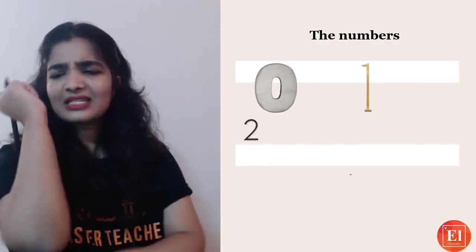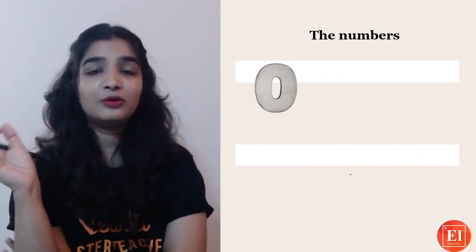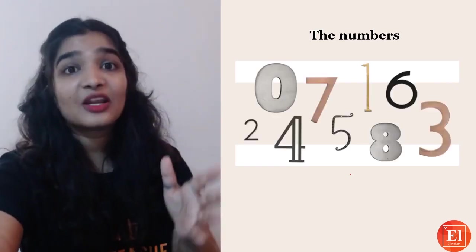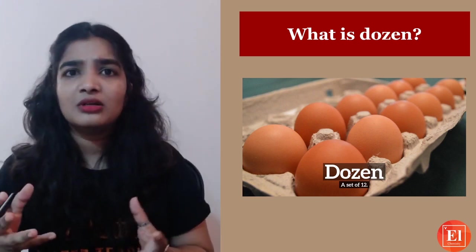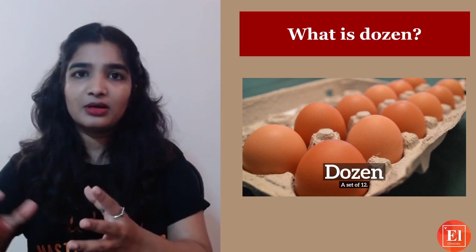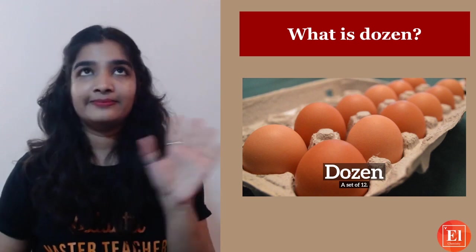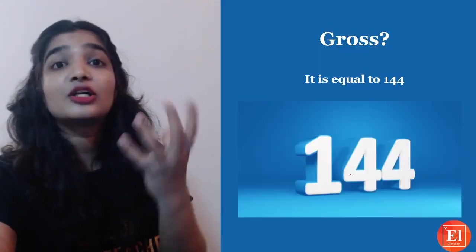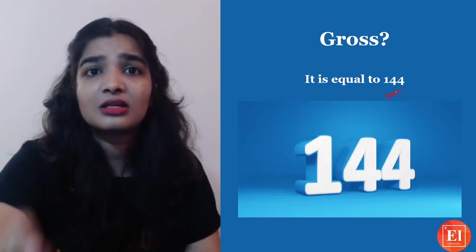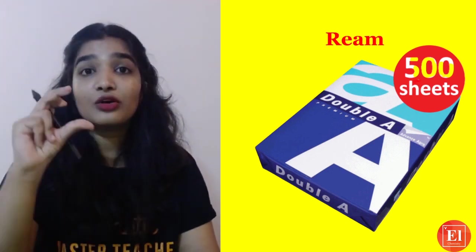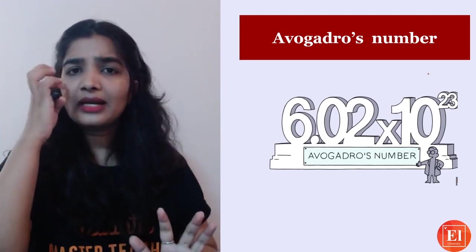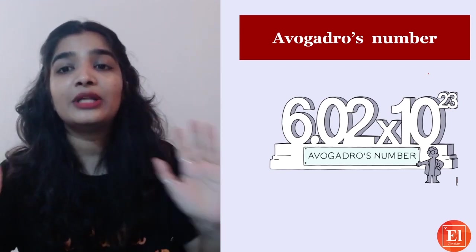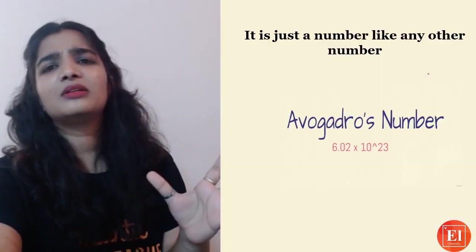Now let's talk about numbers. What is a dozen? A dozen is a set of 12 — when your mom asks you to get a dozen eggs, you get 12. A gross equals 144. A ream equals 500 sheets — a bundle of A4 or A3 sheets has 500. In the same way, Avogadro's number also has a fixed value: 6.023 × 10²³. It is just a number — that's it.